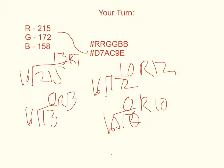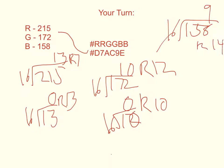And finally, 158 divided by 16 is 9 with a remainder of 14. 14 is equal to the letter E. 9 divided by 16 is 0 with a remainder of 9, thus putting the number 9 in the second position. So the math checks out correctly for this particular problem.